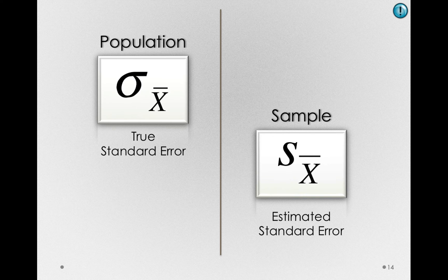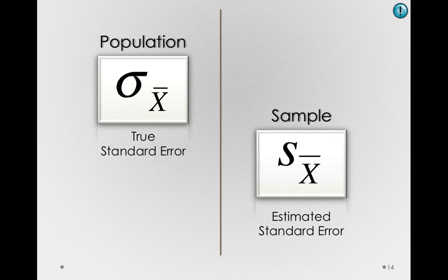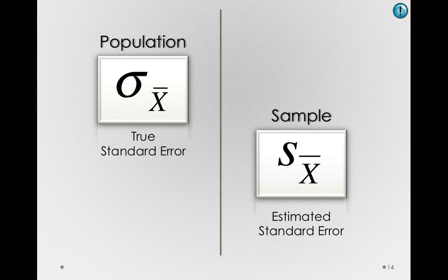Notice that our symbols reflect the fact that we're not calculating a true parameter. So, we use the Roman characters to indicate that we're only making an estimate of the standard deviation of the sampling distribution of sample means.